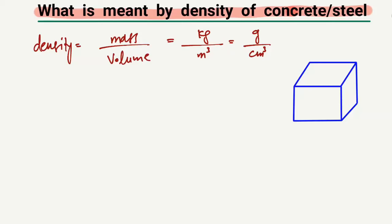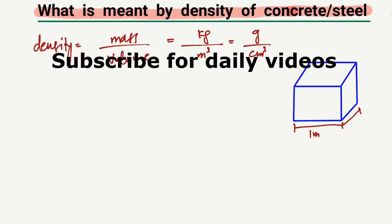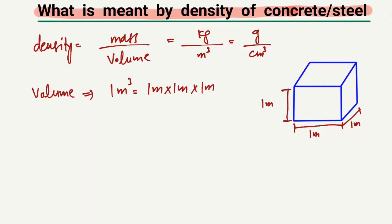Here we are only interested in the density of concrete and steel. To explain this, I'm going to take an example using a cube with unit dimensions: one meter in length, one meter in width, and one meter in height. The volume of this cube is one cubic meter.